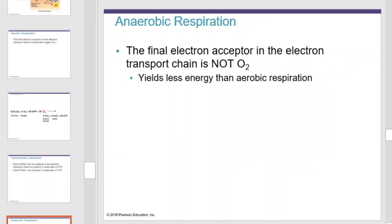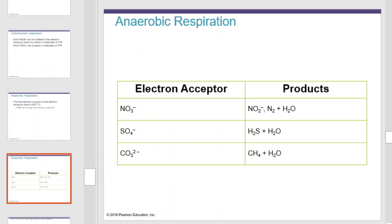In anaerobic respiration, the final electron acceptor in the electron transport chain is not oxygen. Anaerobic respiration yields less energy than aerobic respiration. Here we have a comparison of electron acceptors and their products for anaerobic respiration.